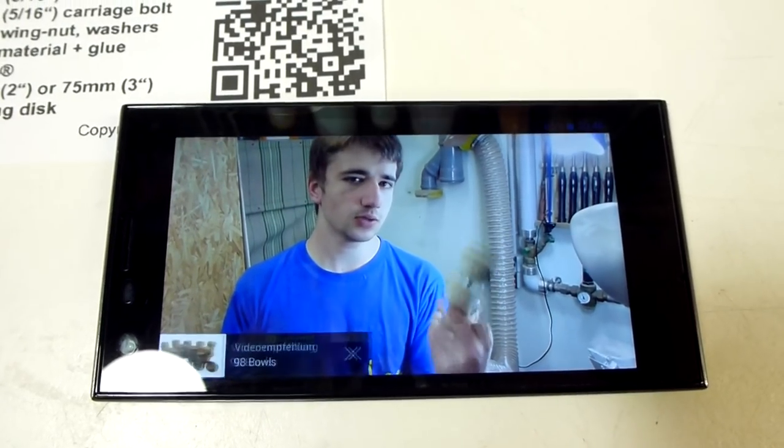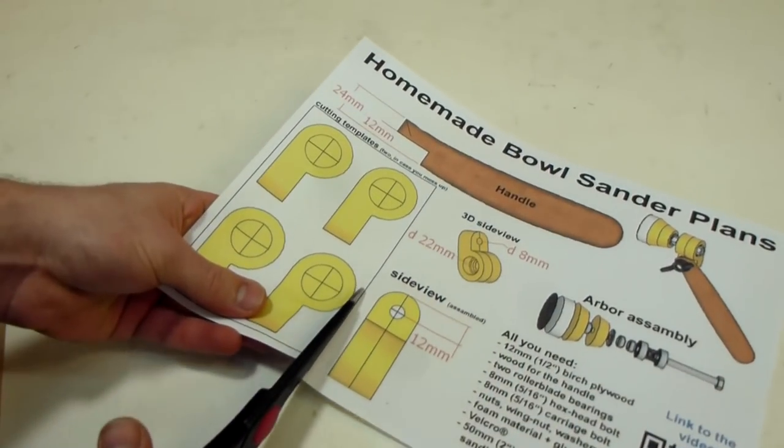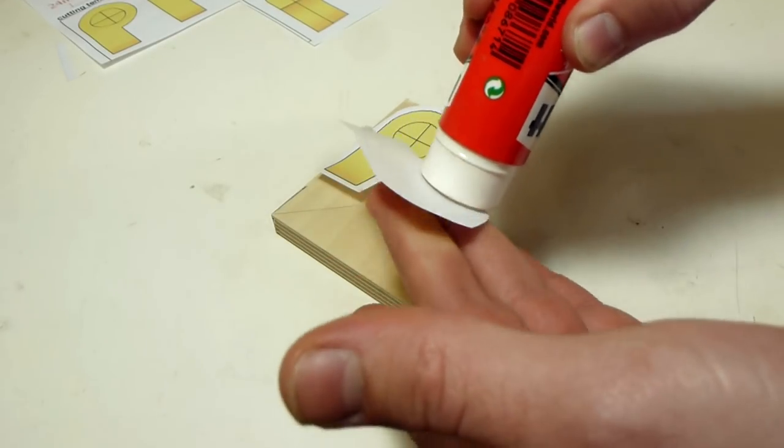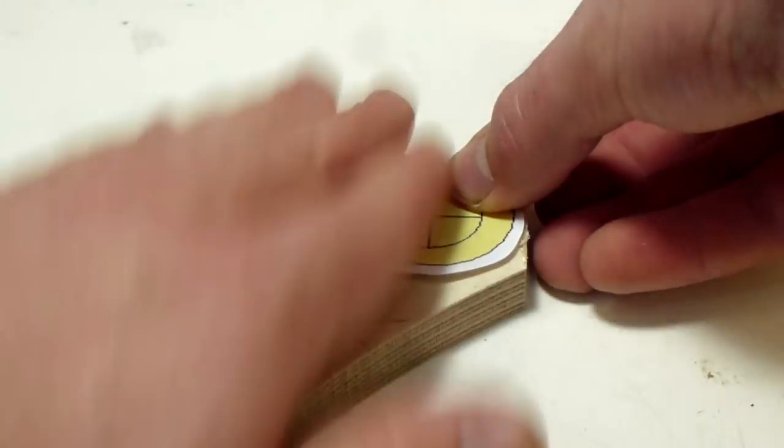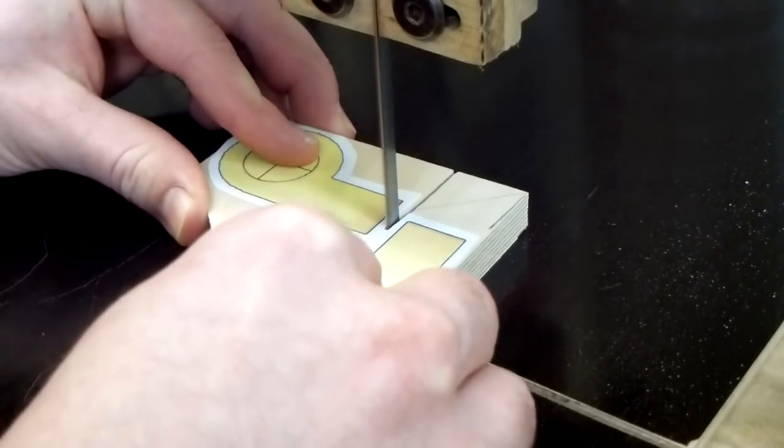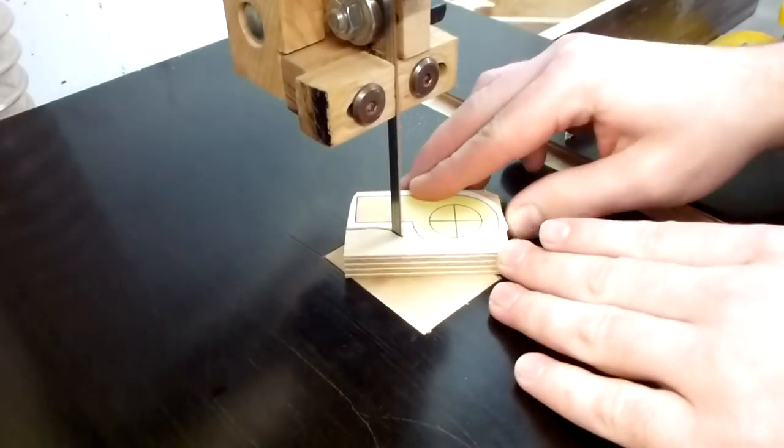You begin by cutting out two of the templates and glue them onto some 12mm birch plywood. Then you cut out the shapes roughly with about 3mm of overhang.